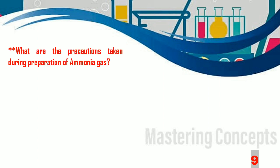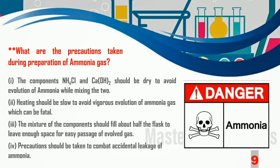Now, what precautions should be taken during the preparation of ammonia gas in the laboratory? Firstly, both ammonium chloride and calcium hydroxide should be completely dry to avoid evolution of ammonia while mixing. Secondly, heating should be slow to avoid vigorous evolution of ammonia gas. The mixture should fill only half the flask to leave enough space for easy passage of the evolved gas. Precaution should always be taken to combat accidental leakage of ammonia.